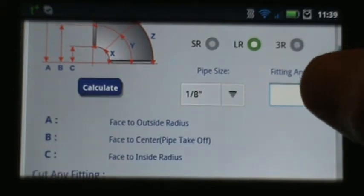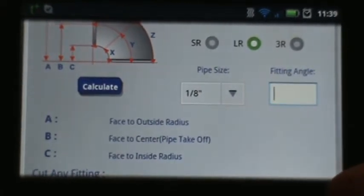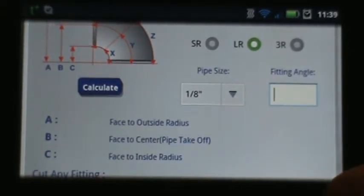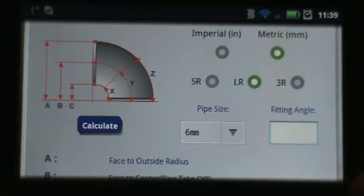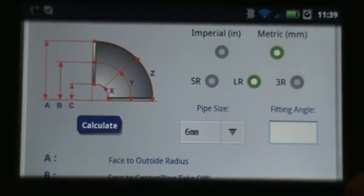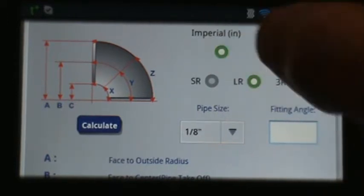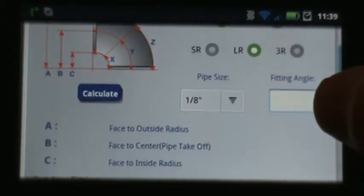Now you scroll down you'll see a pipe size drop down list and a fitting angle input text field. Please note on the pipe size if we work in the metric system that the pipe size actually changes to millimeters, so you can reference that easily without having to convert back and forth. Today we're going to use Imperial System.